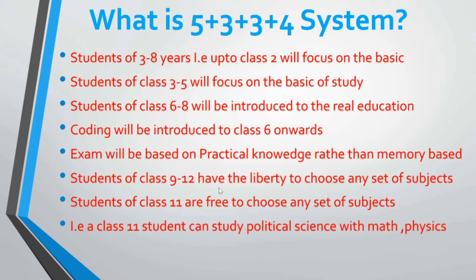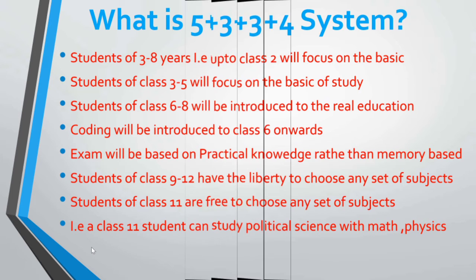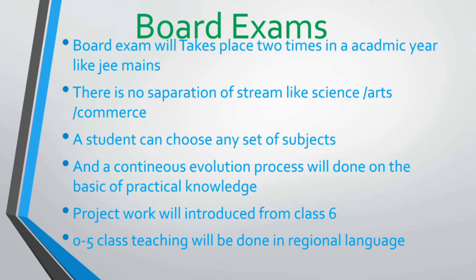Students of class 9 to 12 have the liberty to choose any set of subjects they wish to study. Particularly for class 11 students, they are free to choose any combination of subjects — there is no fixed stream like Science, Arts, or Commerce. They can choose Political Science with Math and Physics or any other combination.